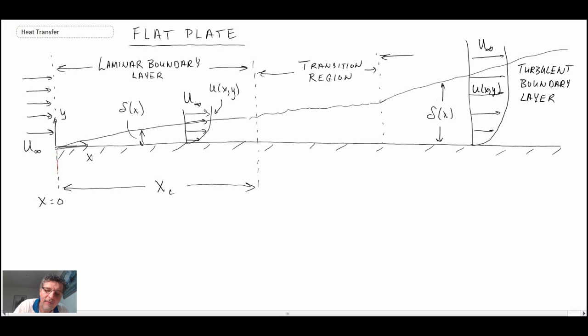And then what happens is the flow undergoes instabilities and growth of these instabilities. And it transitions from laminar into a turbulent boundary layer. And turbulent boundary layer has very different characteristics from the laminar boundary layer. Growth rate is very different, as well as heat transfer characteristics would be very different.